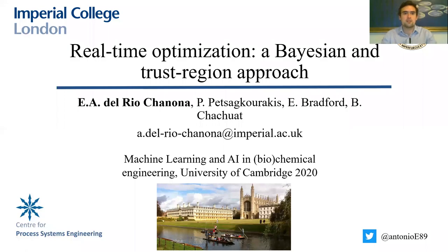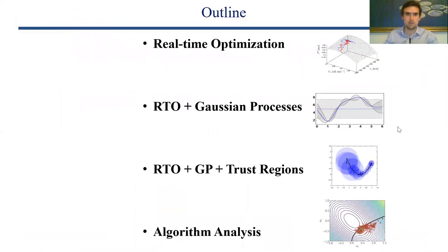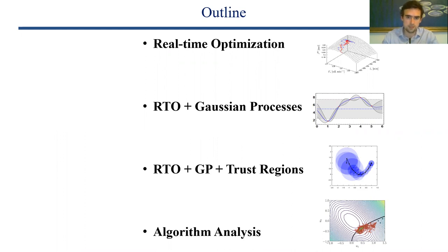Hello everyone. I'm going to be talking about real-time optimization: a Bayesian and trust regions approach. The outline for the talk will be that I'll first discuss what real-time optimization is, then explain how we use Gaussian processes in that context, and more specifically, I'll talk about Bayesian optimization.